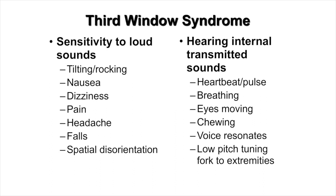Third window patients are also able to hear internal sounds unusually well. They can hear their heartbeat or pulse, their breathing, and their eyes moving or blinking in about a third of these patients. They can hear their chewing very loudly, their voice can be echoey and resonant, and they can hear low-pitched tuning forks applied to their extremities.